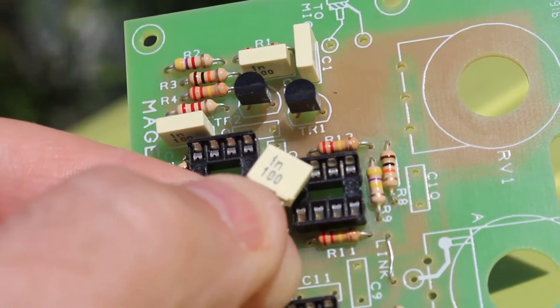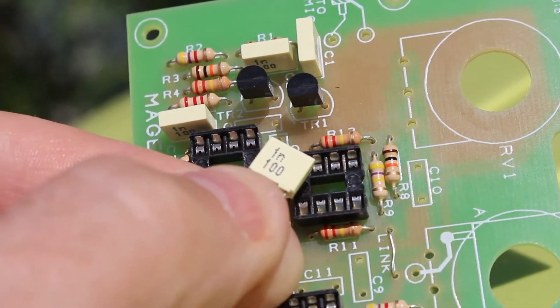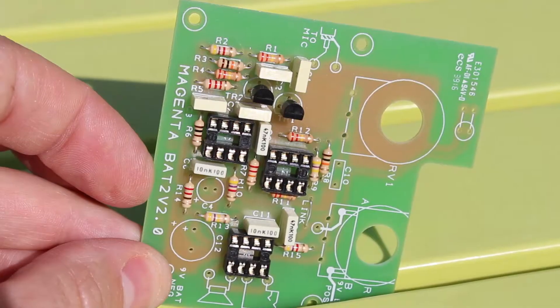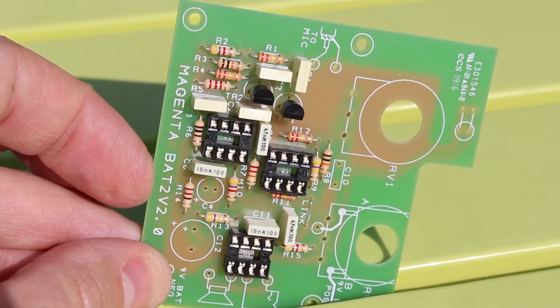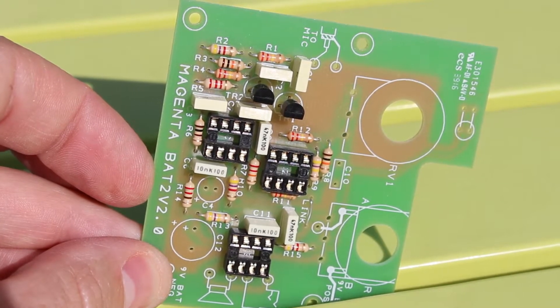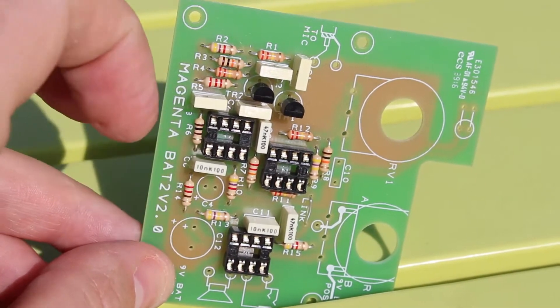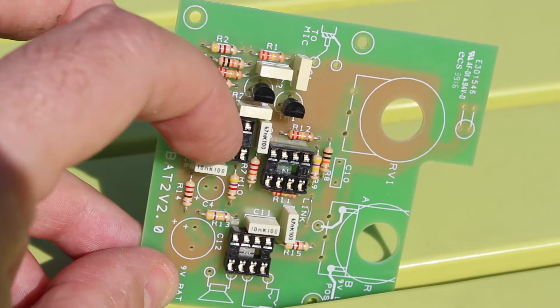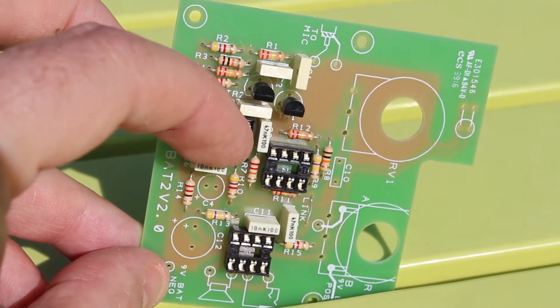Now on to the capacitors. I think the easiest ones to do first are the four 1 nanofarads. So that's all the simple capacitors done. You can see I've done the four 1 nanos and then I've put the two 10s and two 47s. You can tell the difference because it says 10NK100 and 47NK100.